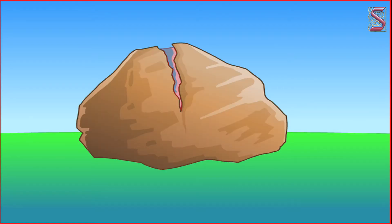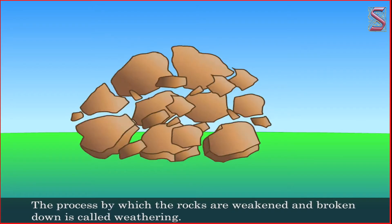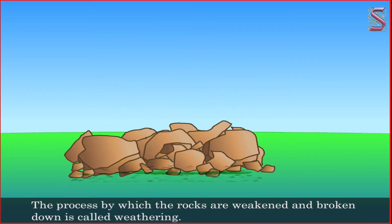The water and the moisture in the air facilitate this process further. The water undergoes a reaction with the chemicals in the rocks and weakens them. The process by which the rocks are weakened and broken down is called weathering.